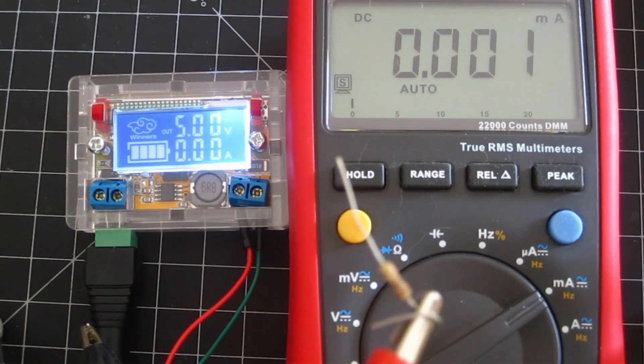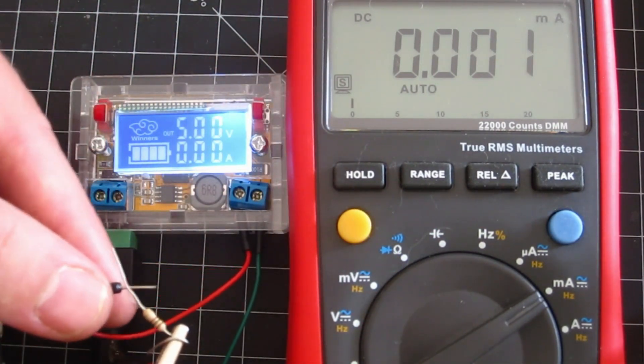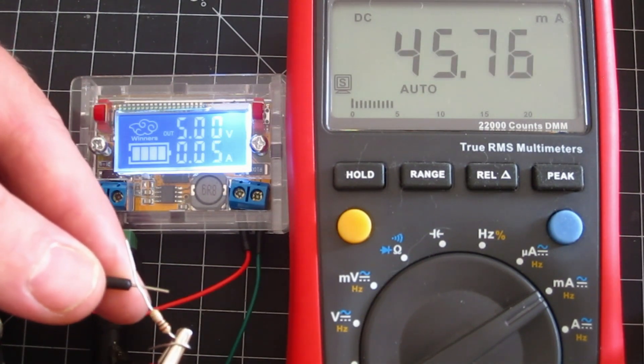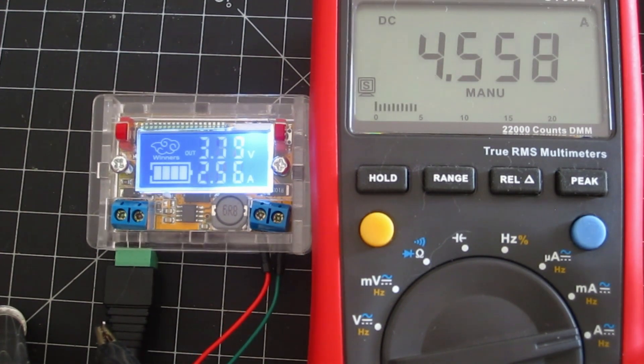To test current sensing, I configured the multimeter and put a 100 ohm resistor between the terminals. There isn't all that much resolution, and it gets pretty confused if you go beyond the 3 amp surge limit, but it still performs pretty well.